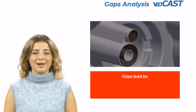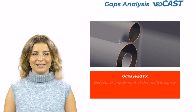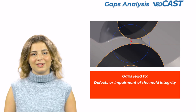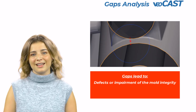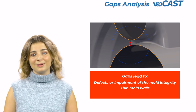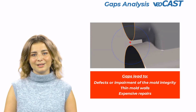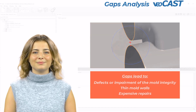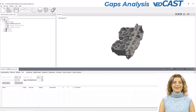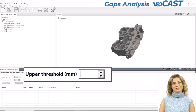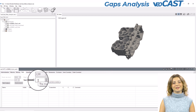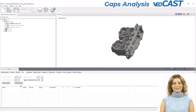Shifting our attention to the gaps analysis, this function identifies gaps in your part that could lead to defects or compromise mold integrity. Gaps create thin walls in the mold that can become brittle and break out over time, necessitating expensive repairs to the mold. In the gaps tab, you can define the upper threshold for the maximum allowed gap size, helping to tailor the analysis to your specific requirements.